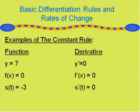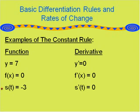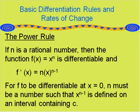Here are some examples of the constant rule. If the function is y equals 7, the derivative is 0. For f of x equals 0, f prime of x equals 0. For f of t equals negative 3, f prime of t equals 0.